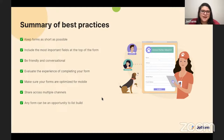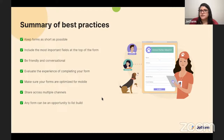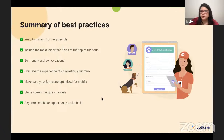Finally, any form can be an opportunity to list build. Annabelle talked about including an opt-in or opt-out checkbox, asking people to confirm they want to sign up for messages from you. If you're attracting new donors or volunteers, these are people already interested in your organization, so there's really no reason they shouldn't be added to your list. Include that opt-in or opt-out option, ask for emails where it makes sense, and you can grow your list that way.